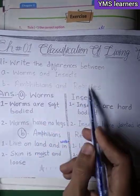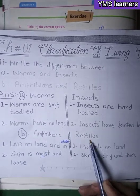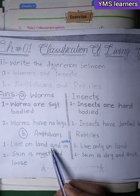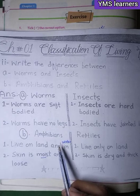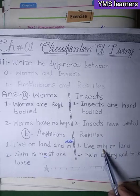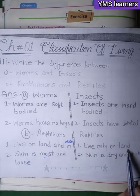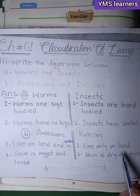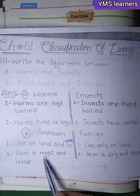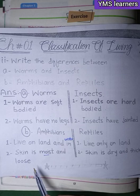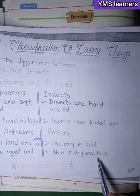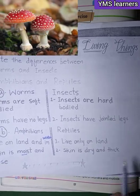The difference between amphibians and reptiles: Amphibians live on land and in water, while reptiles live only on land. Amphibians have smooth and moist skin, whereas reptiles have dry and thick skin.